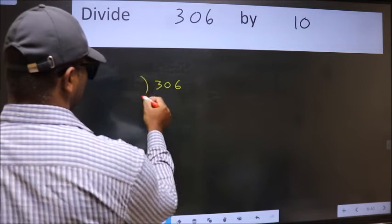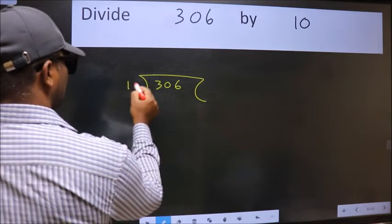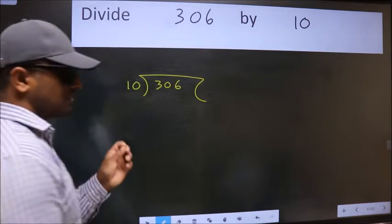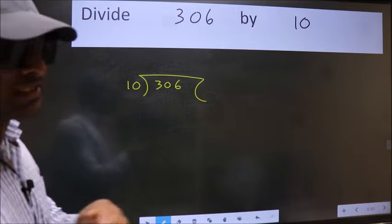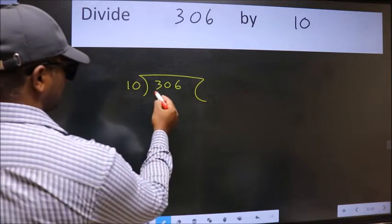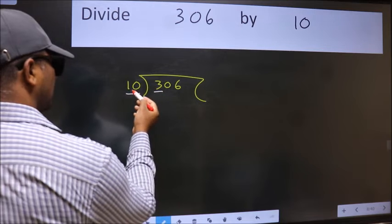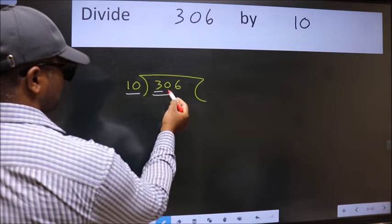306 here, 10 here. This is your step 1. Next, here we have 3 and here 10. 3 is smaller than 10, so take two numbers: 30.